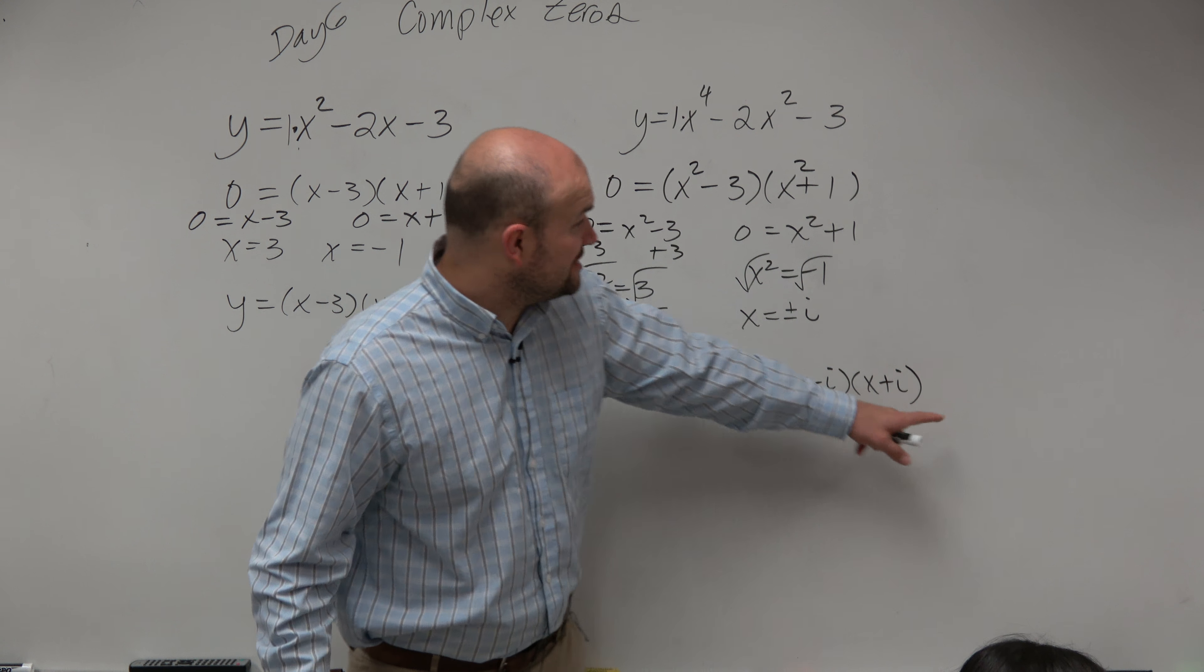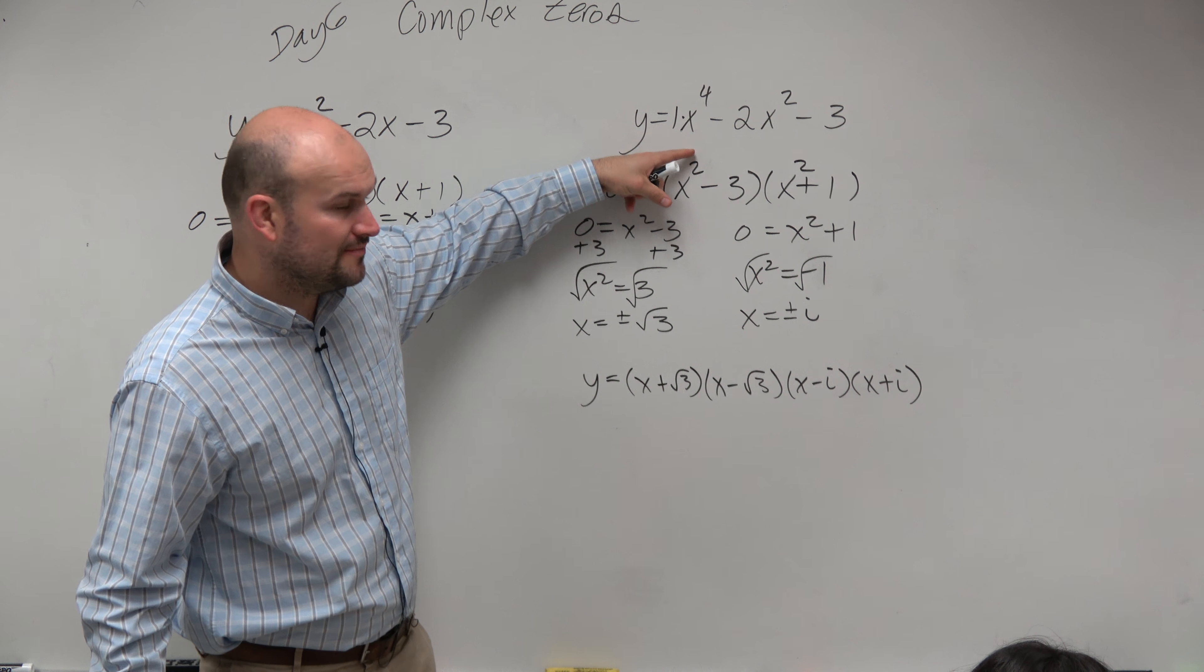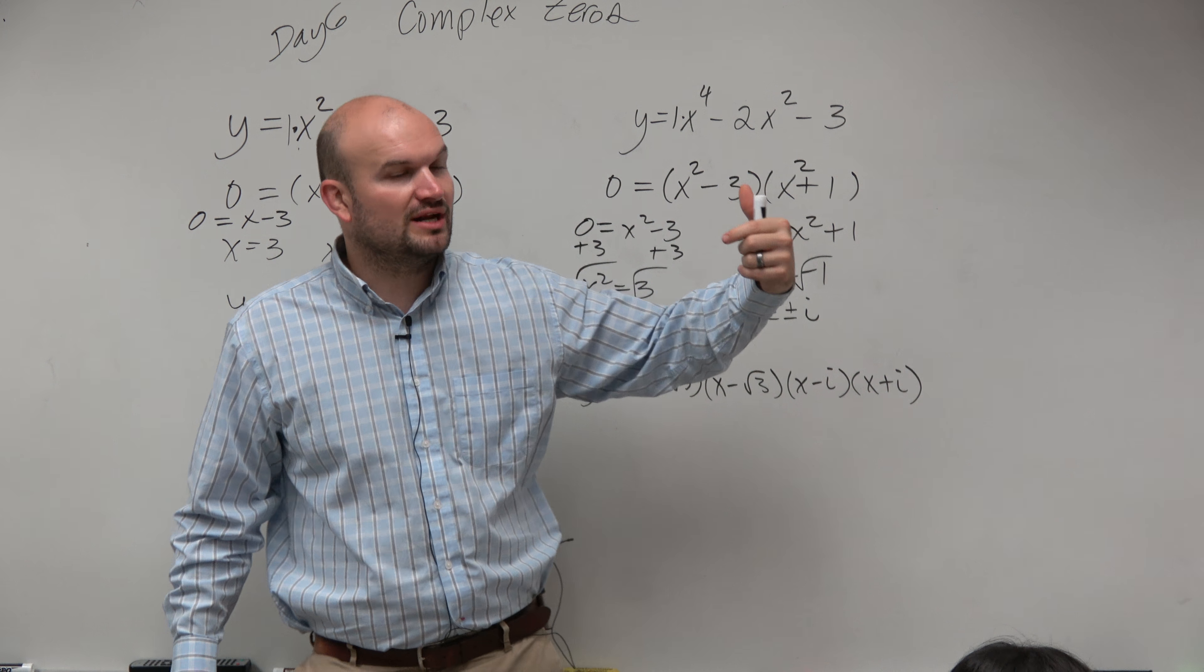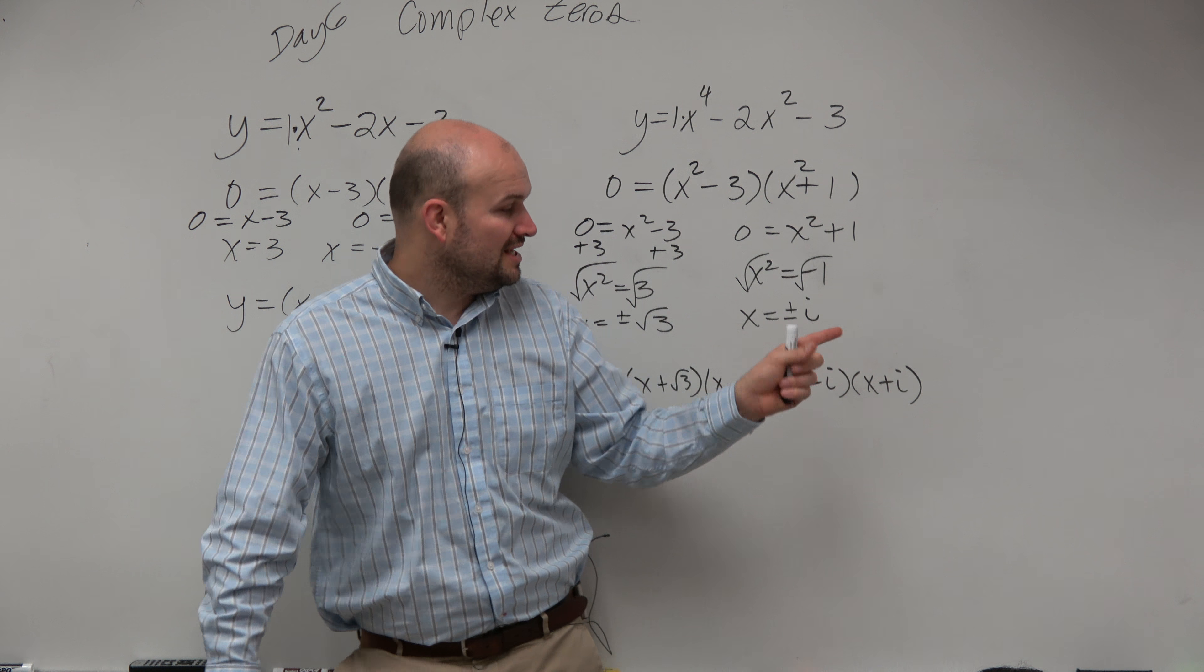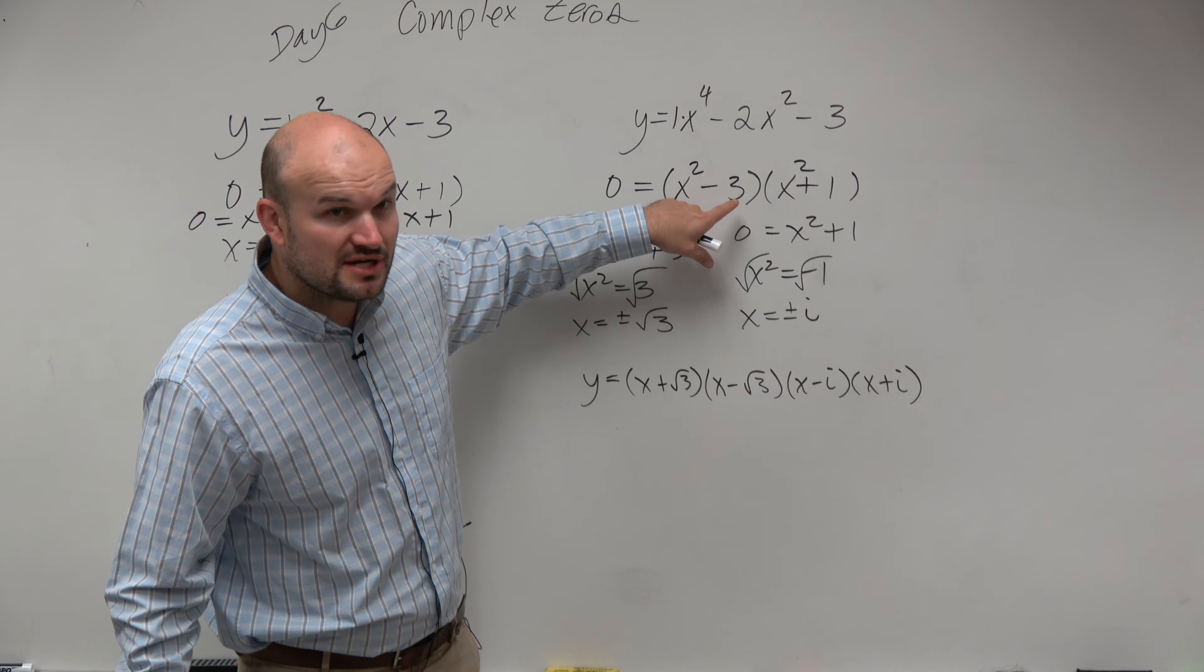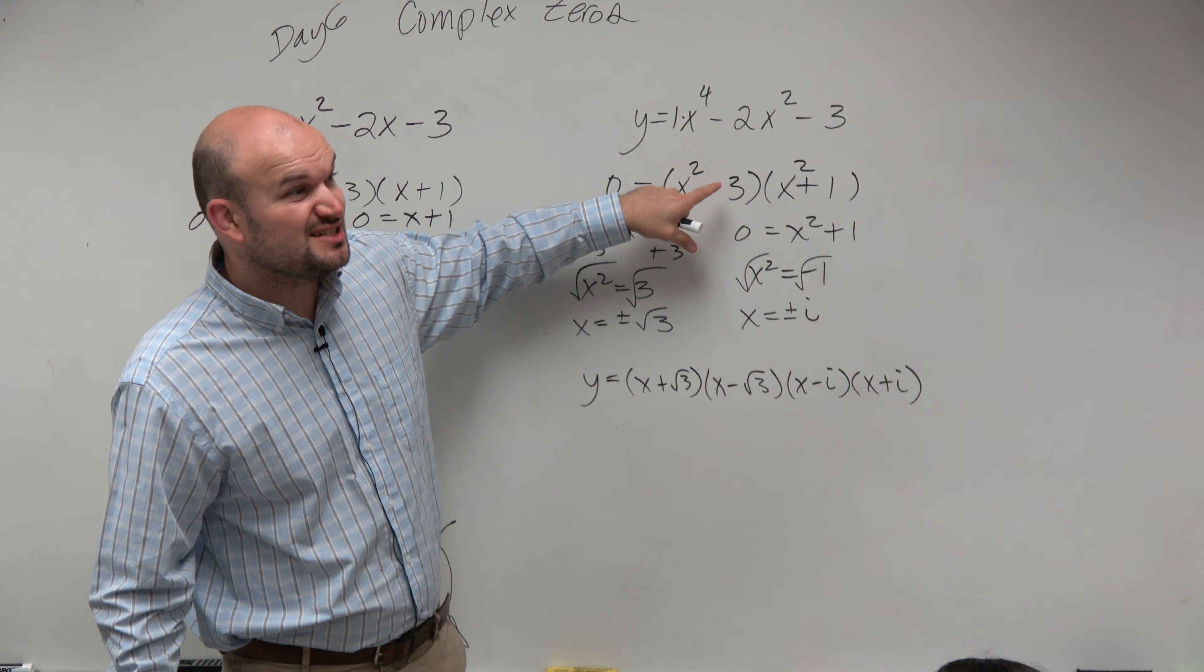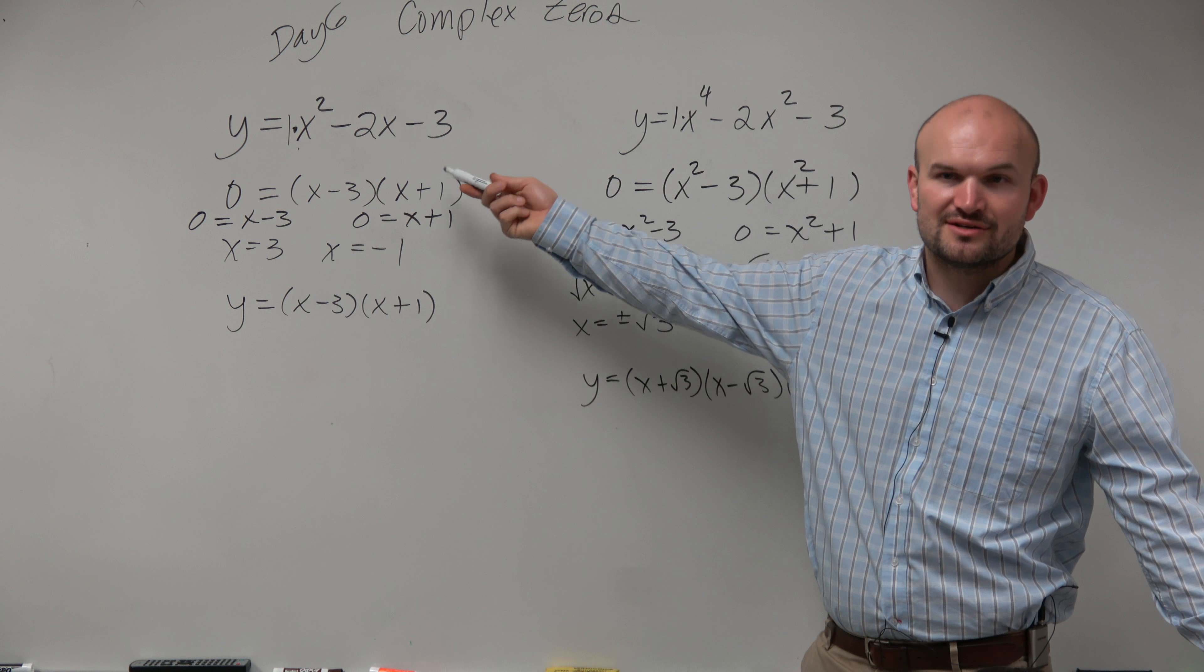And this is the linear factorization. This is the linear factorization, not this. This is factored. That is correct. That's factored. But what we want to talk about is the linear factorization. Because the linear factorization tells you all the zeros in their factored form. Does this tell you what all the zeros are? Nope. Actually, it doesn't tell you any of the zeros. Over here, it actually worked out. Hey, it tells us the zeros. That's nice.